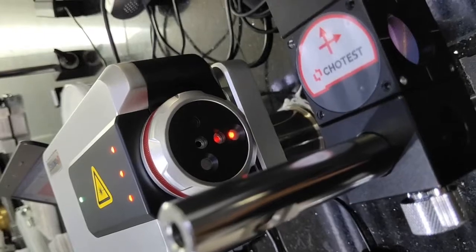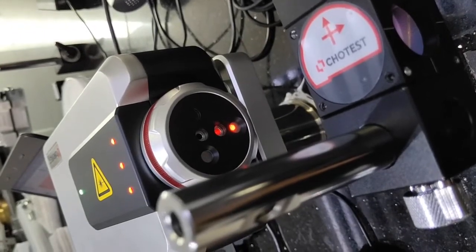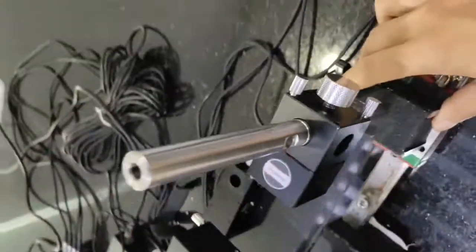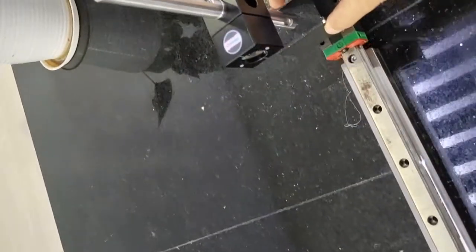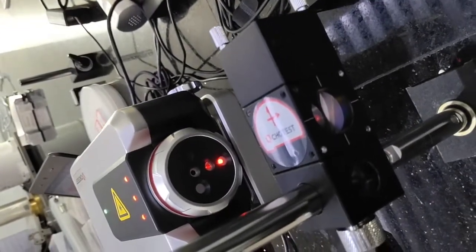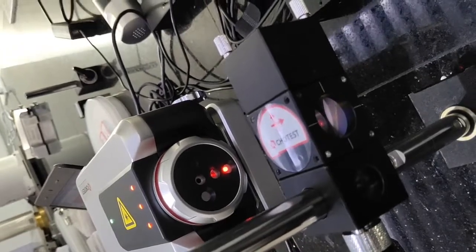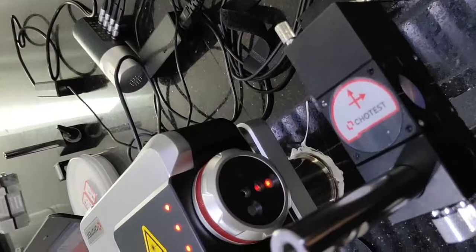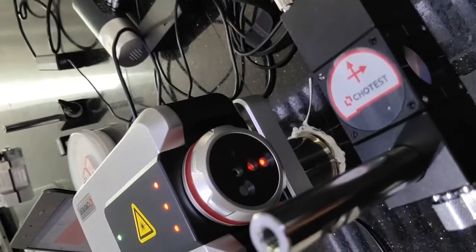After the adjustment, we move the reflector from near side to far side to see if the beam is always in the hole. Always in the hole.